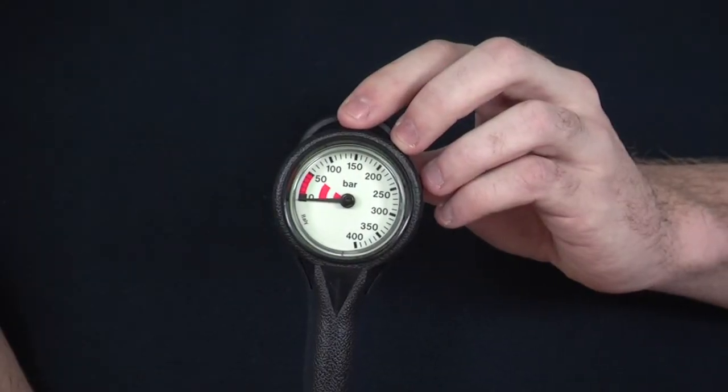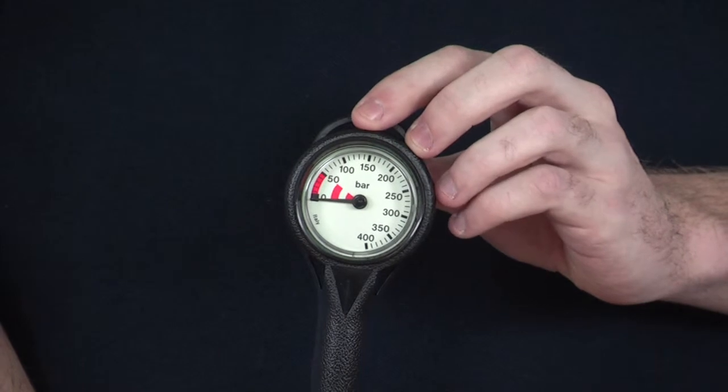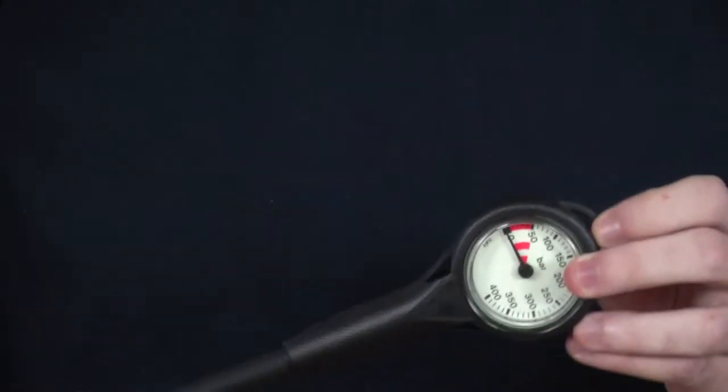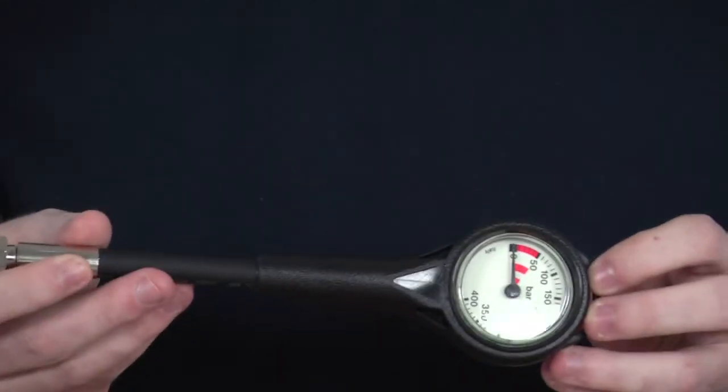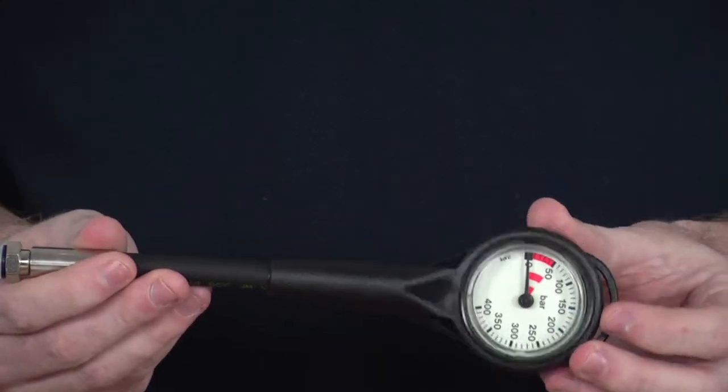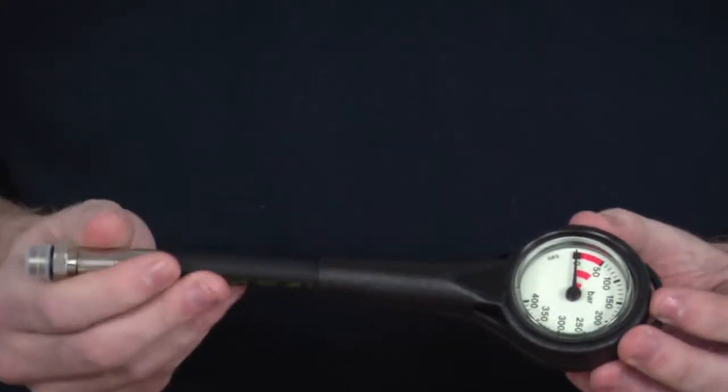Looking at the product in greater detail, the first thing to point out is that this particular product has a 6-inch hose at the bottom here. It's long enough so you can accurately read the dial, but short enough so it doesn't get in the way.